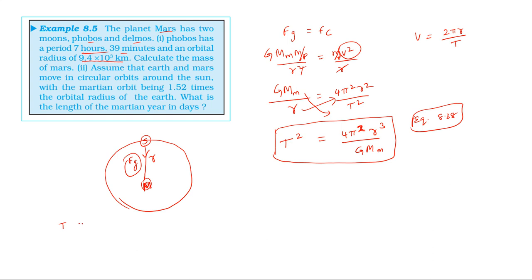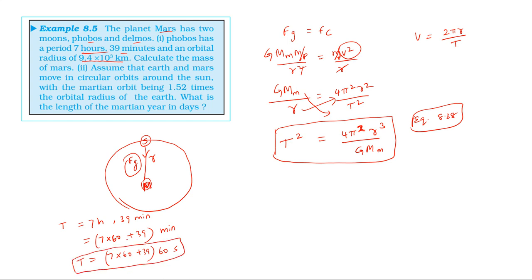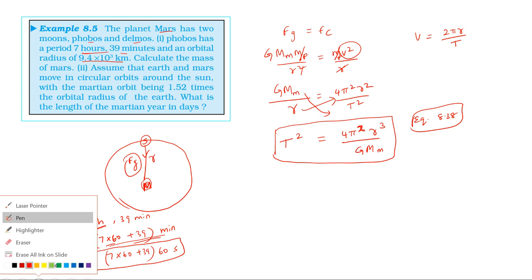The time is 7 hours 39 minutes. Converting: 7 hours equals 7 × 60 minutes, plus 39 minutes. So total is 7 × 60 + 39 = 459 minutes. Then 459 × 60 gives the time period in seconds. So T = 459 × 60 seconds.